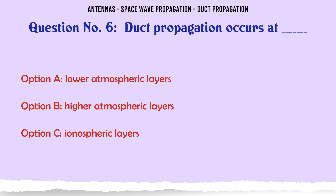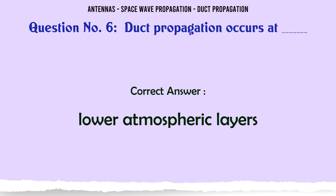Duct propagation occurs at: A) Lower atmospheric layers. B) Higher atmospheric layers. C) Ionospheric layers. D) Any part of the atmospheric layer. The correct answer is lower atmospheric layers.